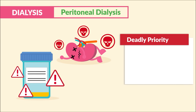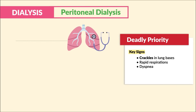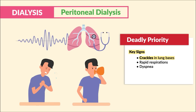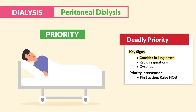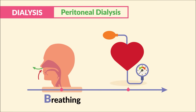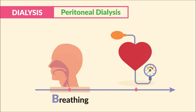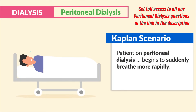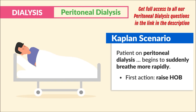Another deadly complication is respiratory distress due to rapid infusion or overfilling the abdomen. The key signs to know are crackles in the lung bases, rapid respirations, and dyspnea — that difficulty breathing. Priority intervention: the first action is to raise the head of the bed. Remember ABCs here — breathing over circulation like blood pressure. Many students get this wrong on various quiz banks. Always intervene on breathing before blood pressure.